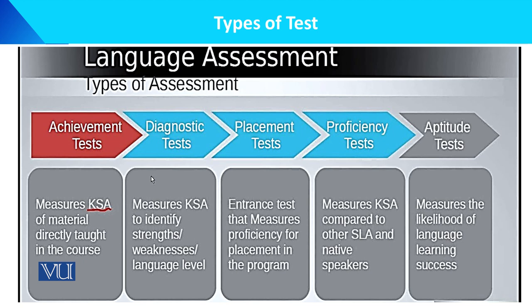Language assessment uses approximately the same types of tests. Achievement test measures KSA — knowledge, skills, and attitude — of material directly taught in the course. Diagnostic test identifies strengths and weaknesses. Placement test, also called an entrance test, measures proficiency for placement in the program. Proficiency test compares performance to SLA and native speakers.